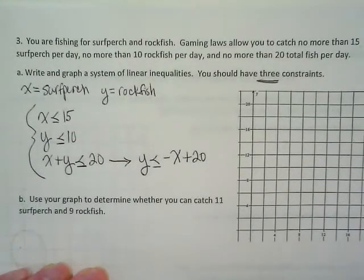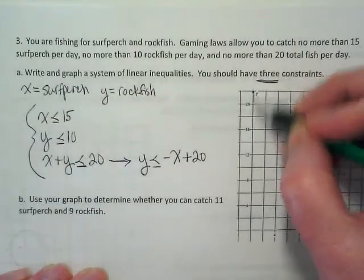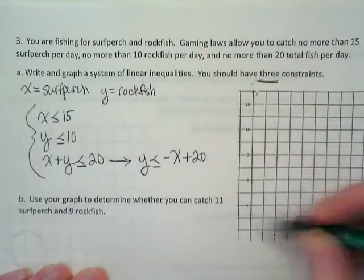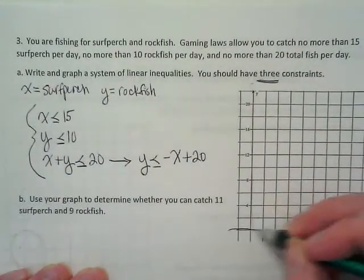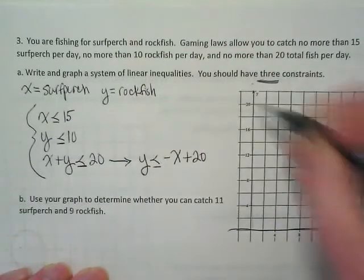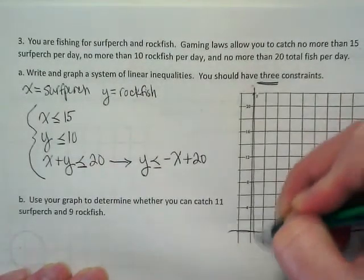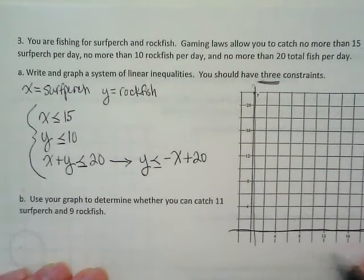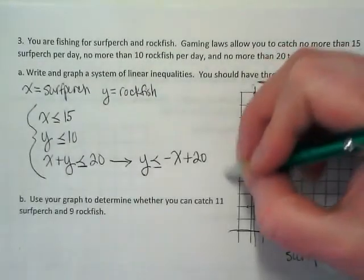Now to start graphing, we have to label our graphs first. This is my y-axis, this is my x-axis. They already have some numbers on them. We need to put the words. What words should go down underneath x? Surfperch. And along the y? Rockfish.